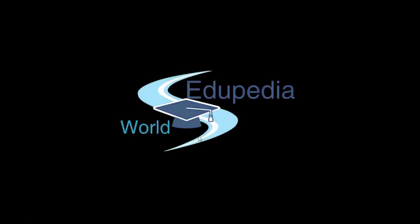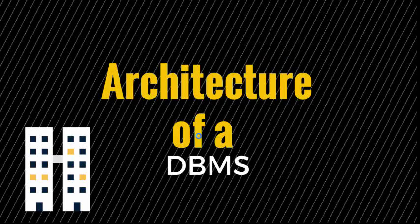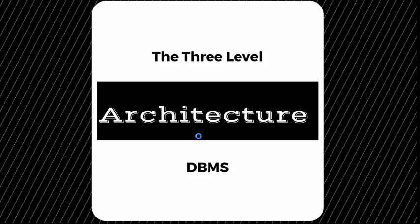Welcome to Adupedia World videos. In this session we will learn about the architecture of a DBMS, specifically the three-level architecture. The design of a DBMS depends on its architecture — it can be centralized, decentralized, or hierarchical. The architecture can be seen as single-tier or multi-tier. An entire architecture divides the whole system into related but independent modules which can be independently modified, altered, changed, or replaced.